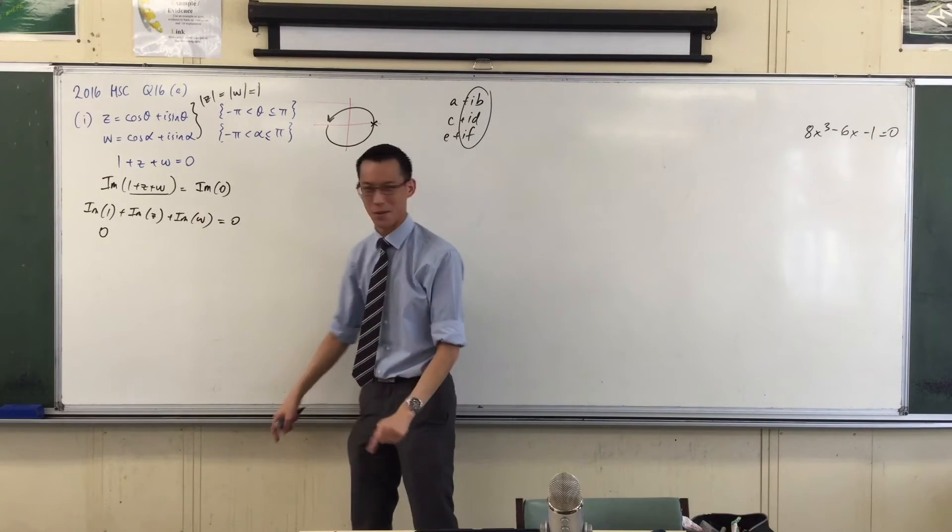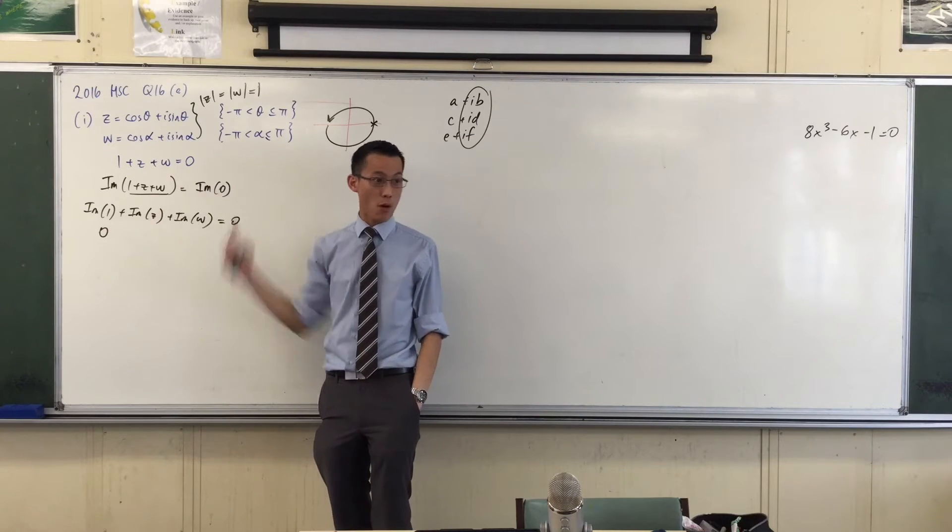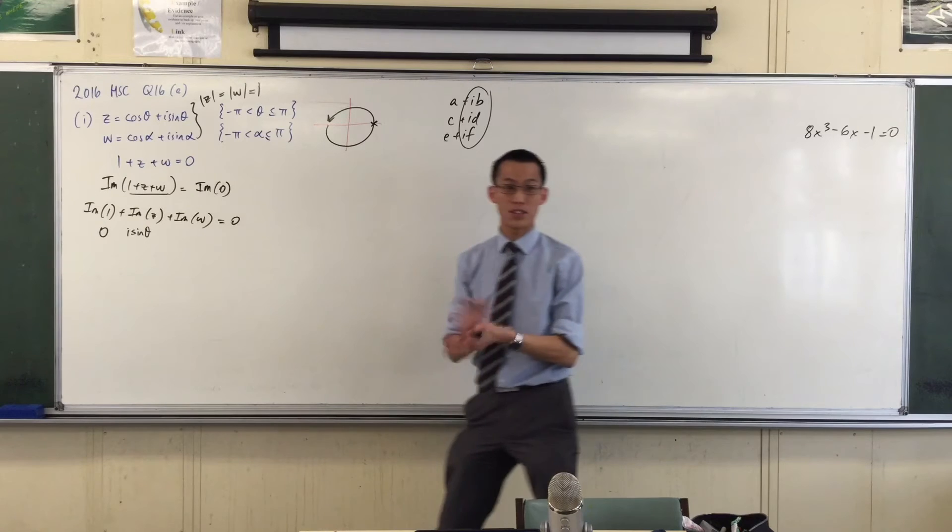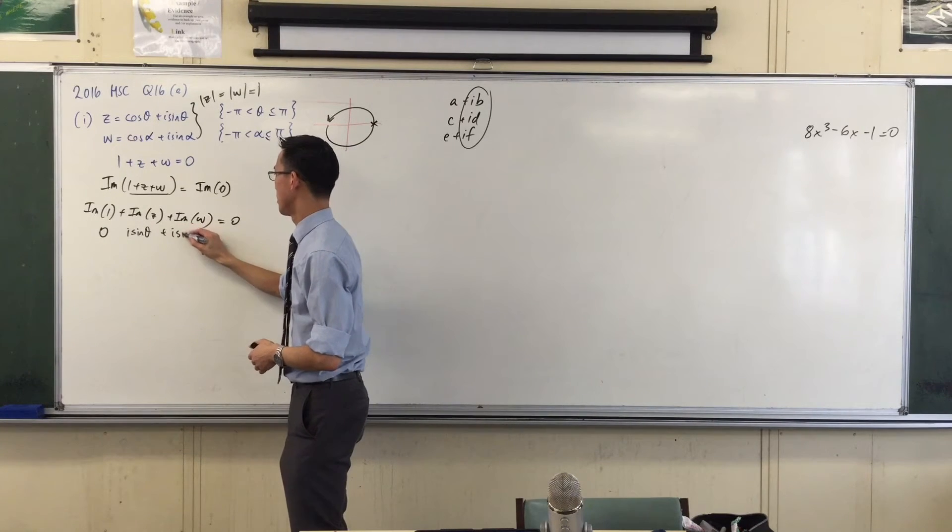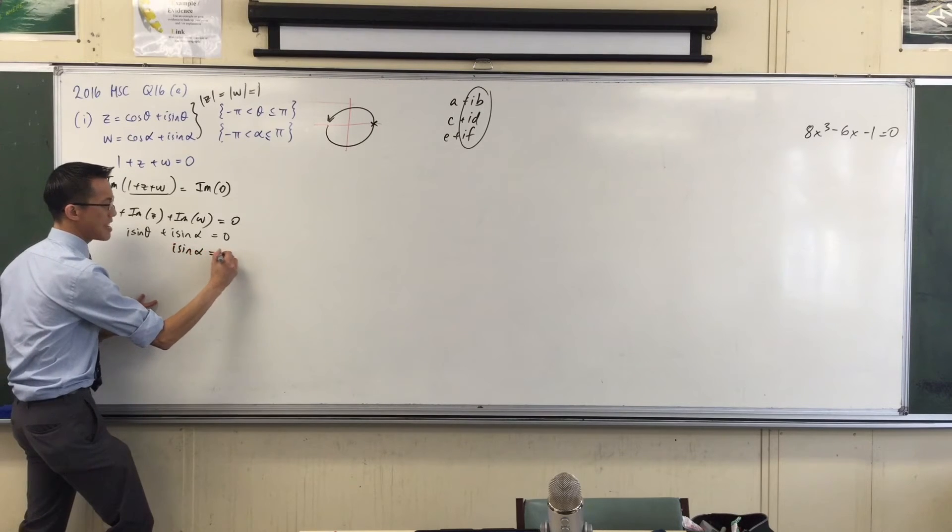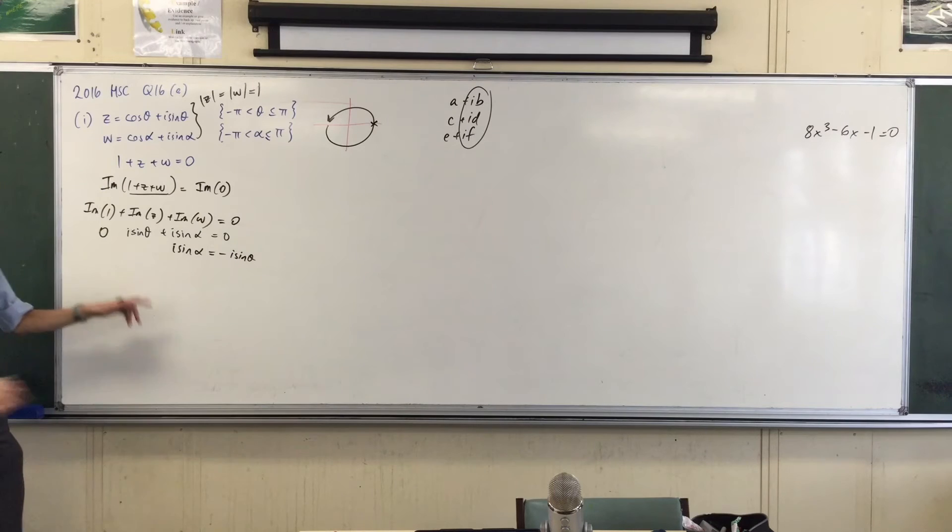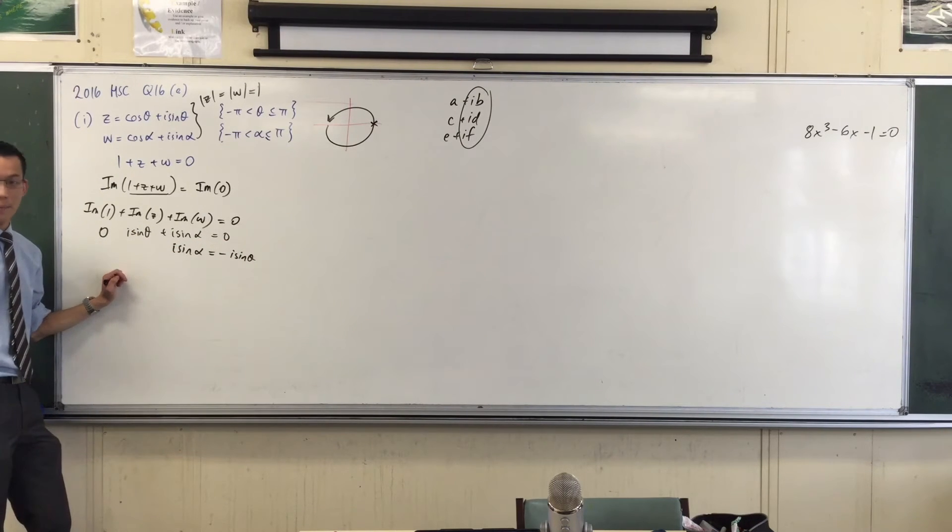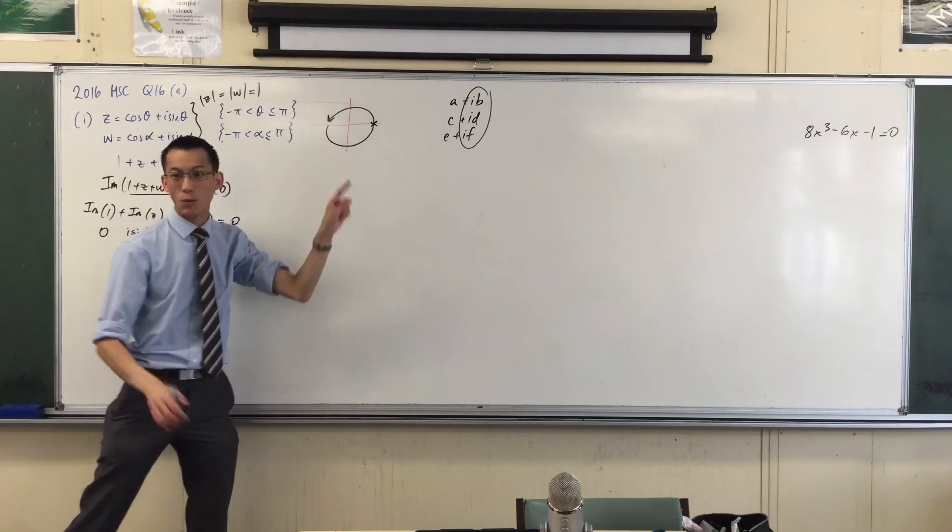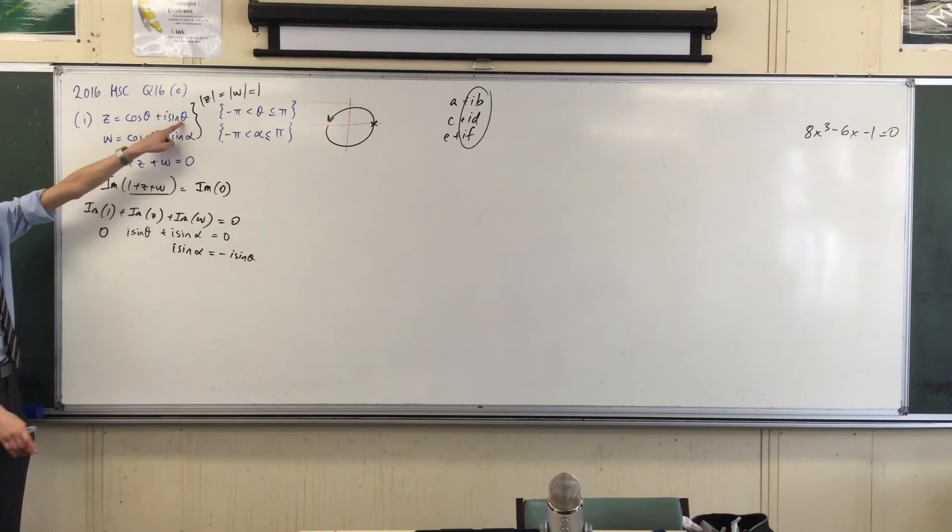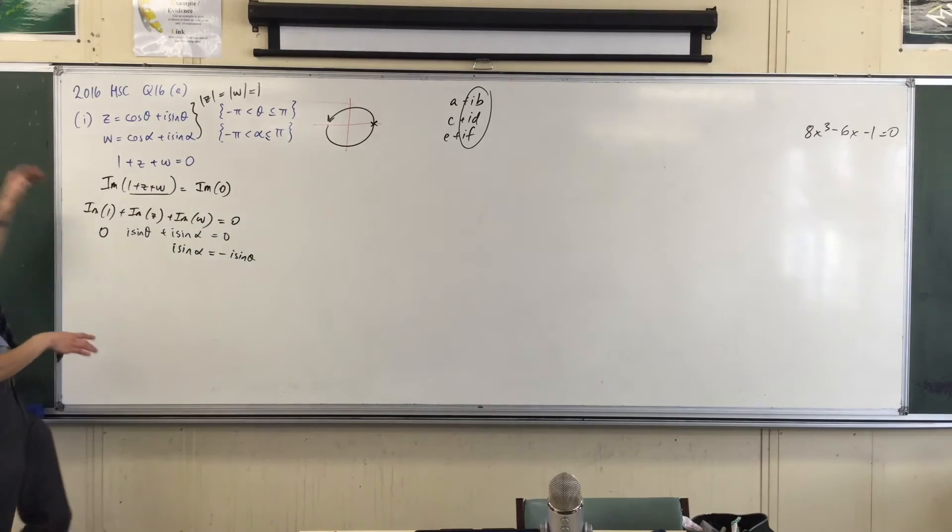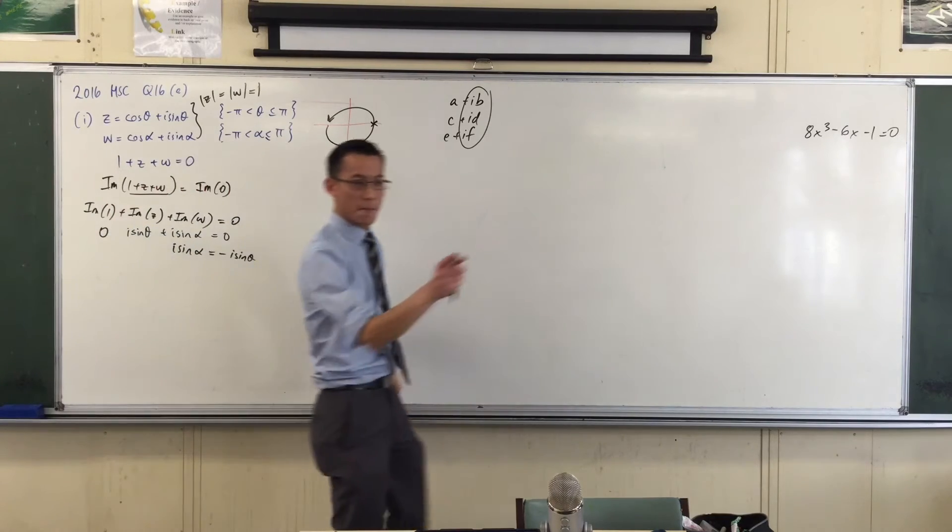What's the imaginary part of Z? I actually know what it is: R sin θ. And in the same way, the imaginary part of W is R sin α. This means R sin α equals negative R sin θ. This is good—this is progress. This is showing me a relationship. Wherever this number happens to be, this guy's going to be on the exact opposite side of the real axis, because one might be up and the other is down, or vice versa.